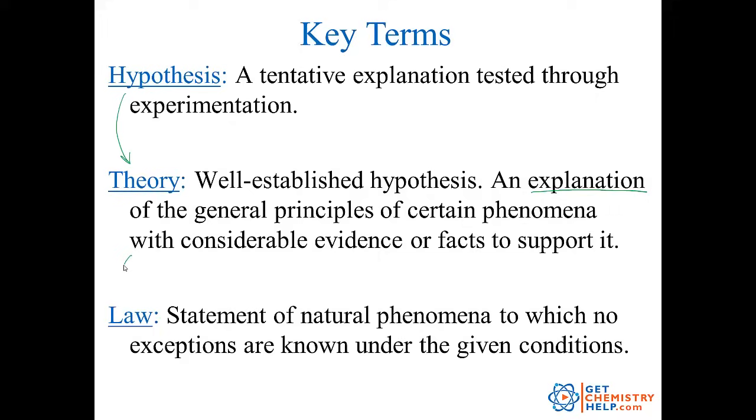A theory can never become a law. There's a common misconception that says, eventually, after enough time, a theory will become a law, but that's not true. Because while a theory is an explanation of why something happens, a law is just simply a statement of what's happening. For example, the law of gravity does not try to explain how gravity occurs. All it does is it just states that gravity happens. It's not trying to explain it.